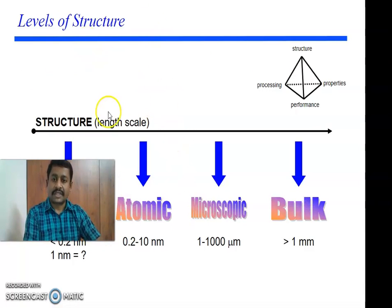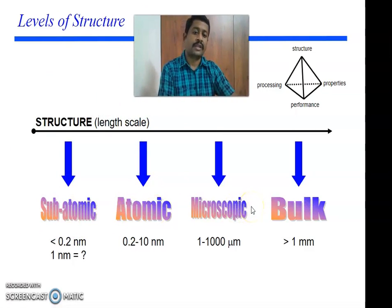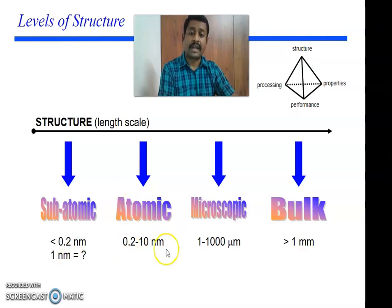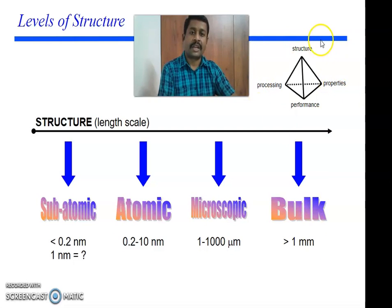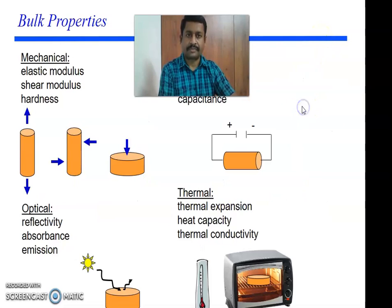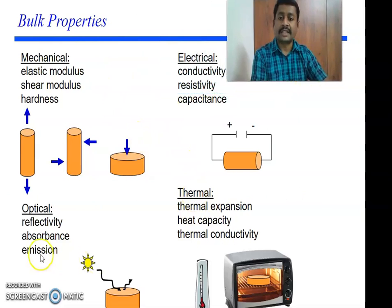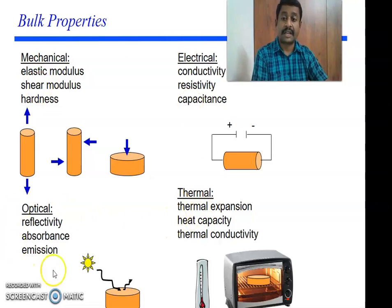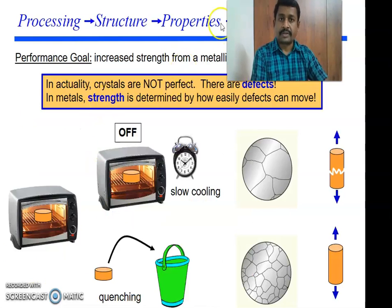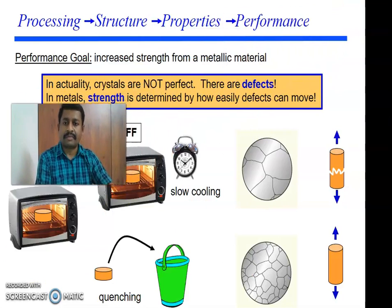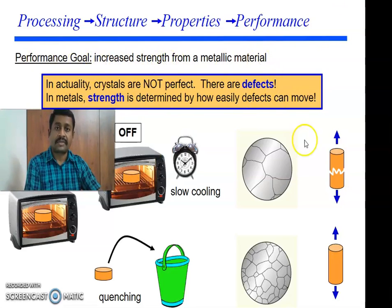The levels of structure by length scale are: subatomic (0.2–1 nm), atomic (0.2–10 nm), microscopic (1–1000 micrometers), and bulk material (above 1 mm). Structure depends on processing, and processing determines properties and performance. Bulk properties include mechanical (elastic modulus, hardness), electrical (conductivity, resistivity, capacitance), thermal (thermal expansion, heat capacity, thermal conductivity), and optical (reflectivity, absorption, emission) properties. The main goal of material science and engineering is to understand the relationship between processing, structure, properties, and performance — for example, increased strength from a metallic material.